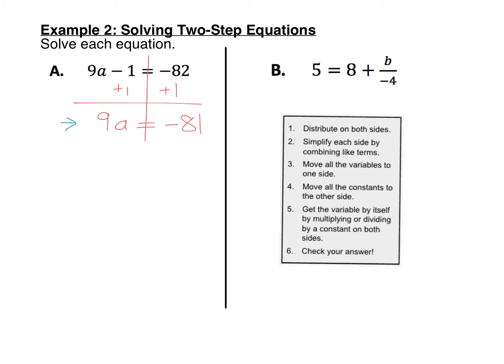The intermediate steps to go from this line to this line aren't typed in there. Now let's undo that 9 in front of the a by dividing each side by 9. And when we do that, we get a equal negative 9. That appears to be our answer.